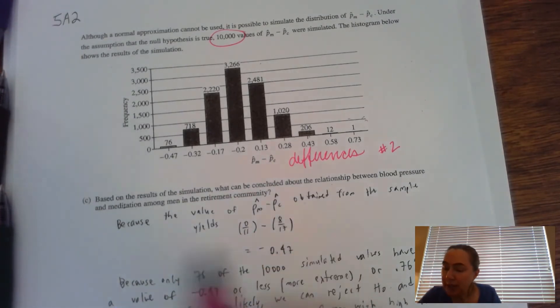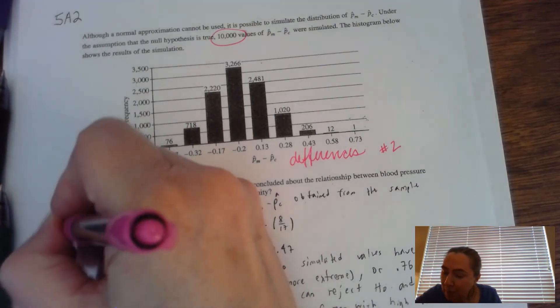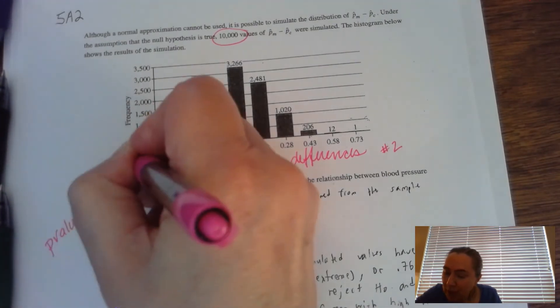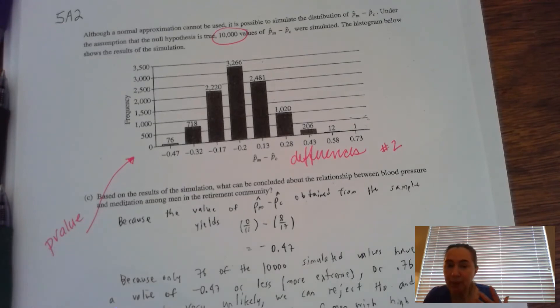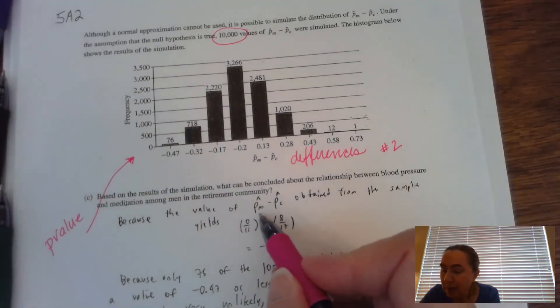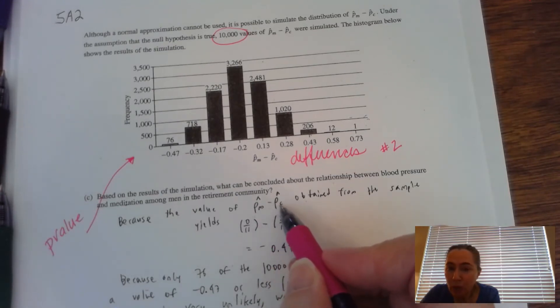And it says based on the results of the simulation. So that means we're going to get our results based on that. So what can be concluded about the relationship? So really the goal here is to calculate a P value based on the results of this particular histogram.